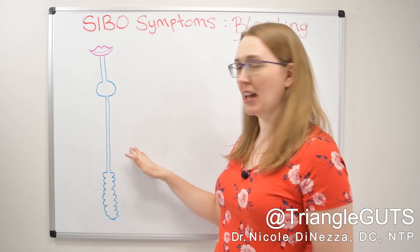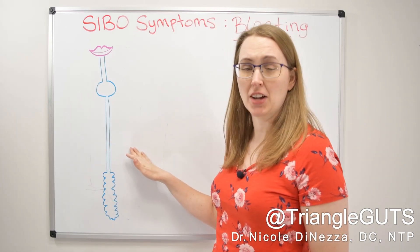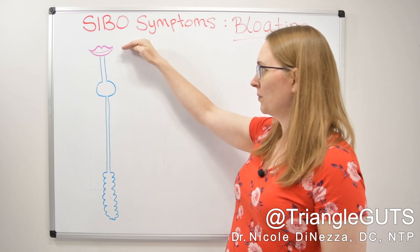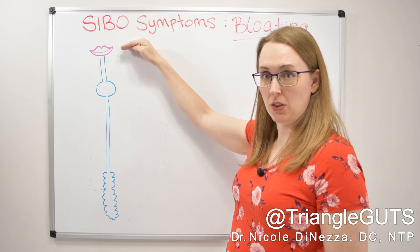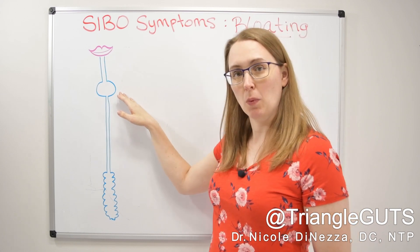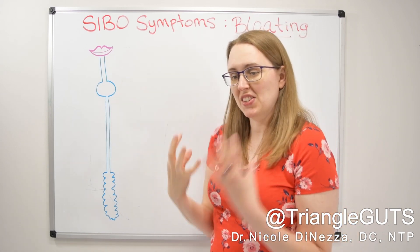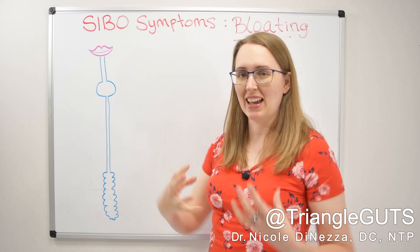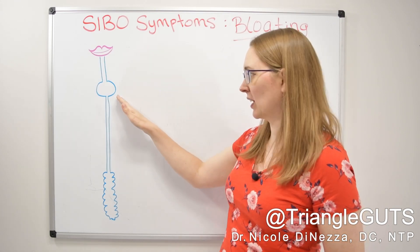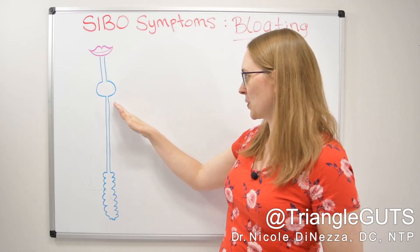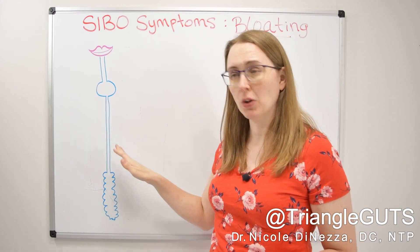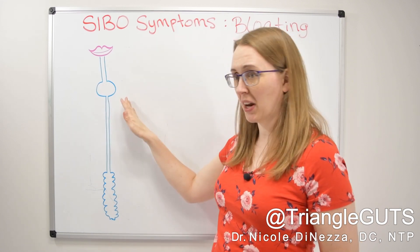If you have a GI tract — which I'm assuming you do — you can imagine it's something akin to this. The food goes in through your mouth, goes through the esophagus, lands in the stomach for a while where it gets mixed with enzymes and acid, gets mushed up into a paste, and then that chyme gets squirted out into the small intestine, which is by far the longest part of the bowel.